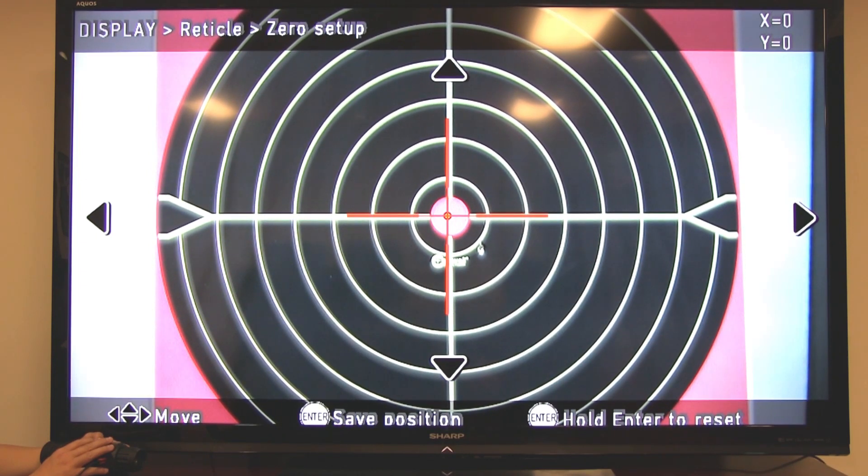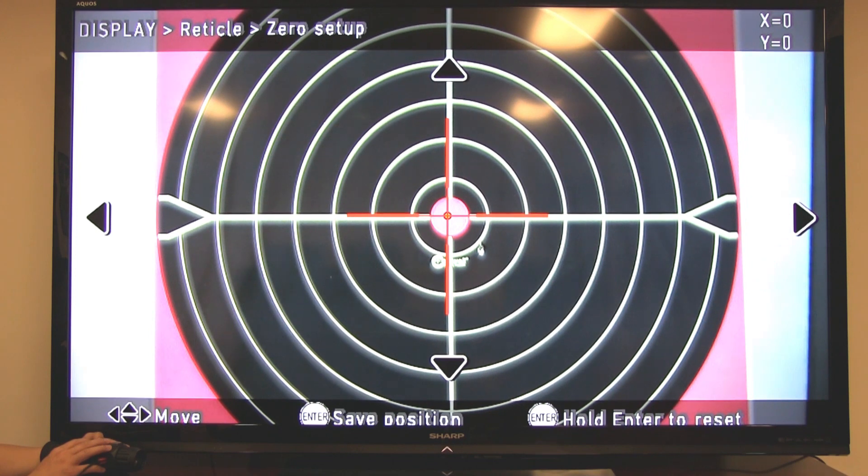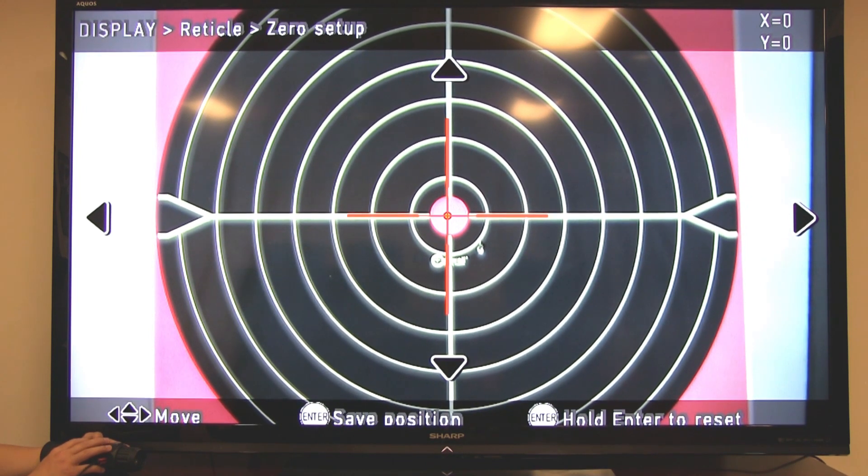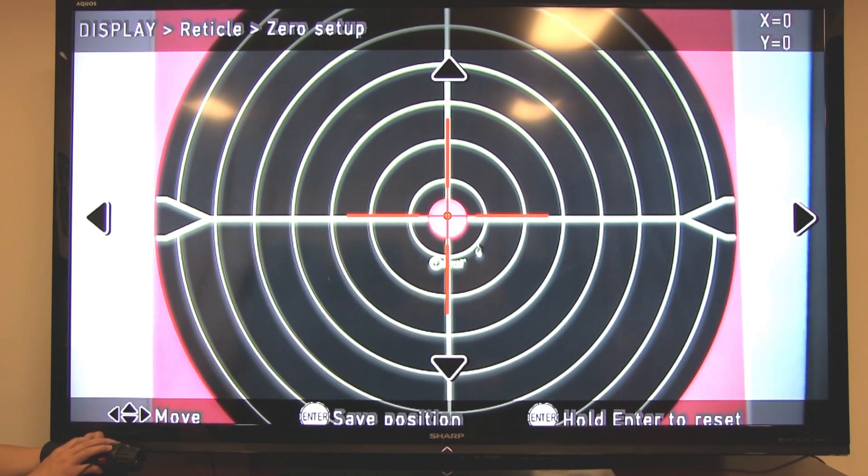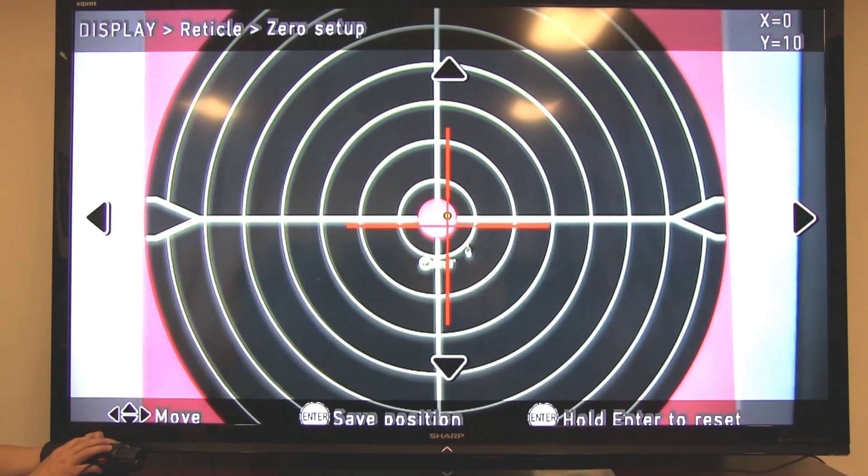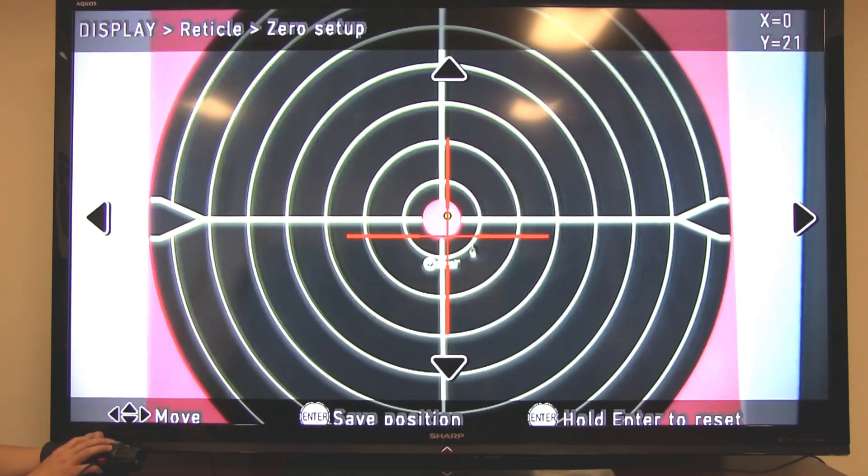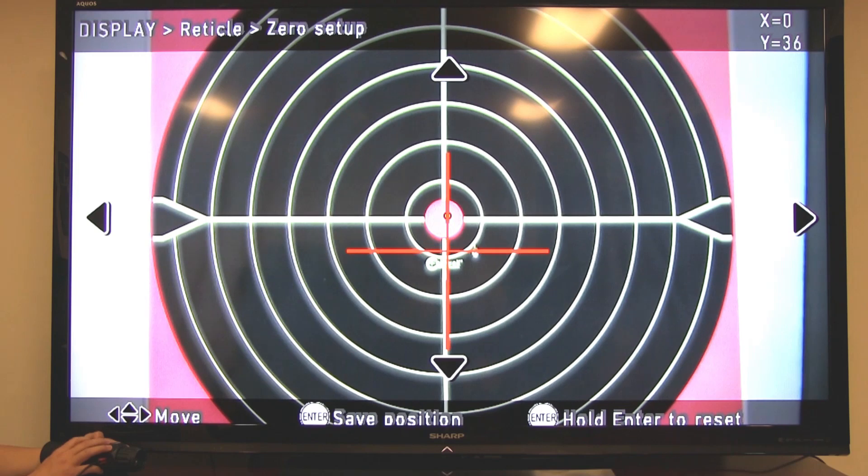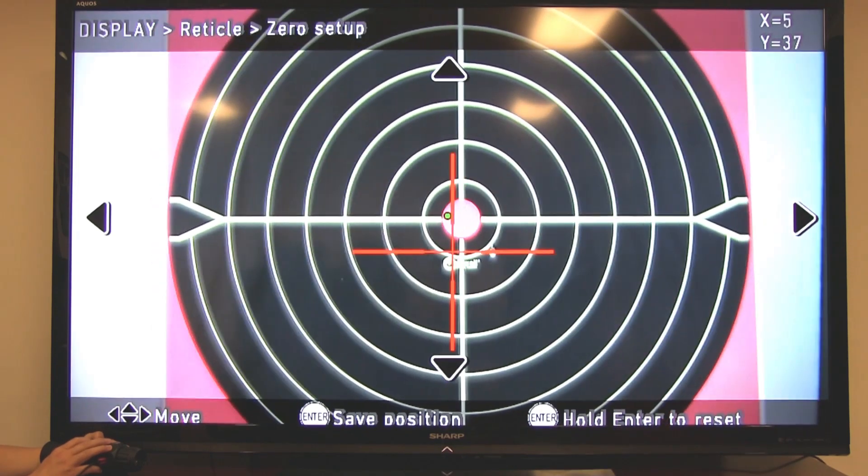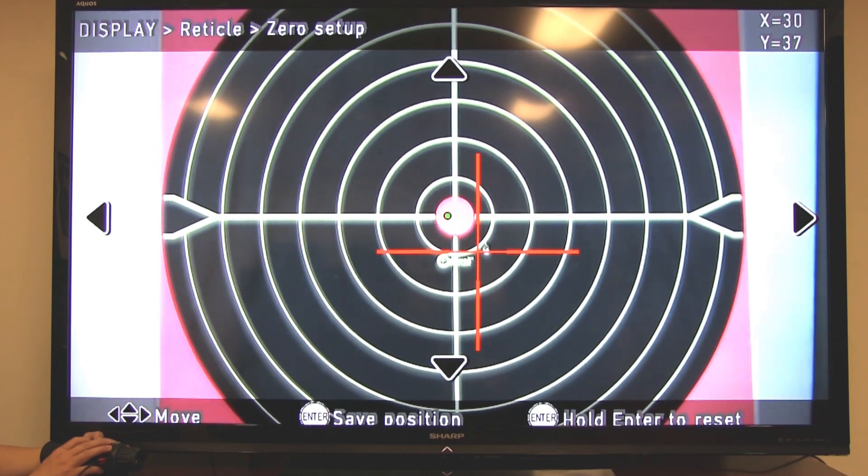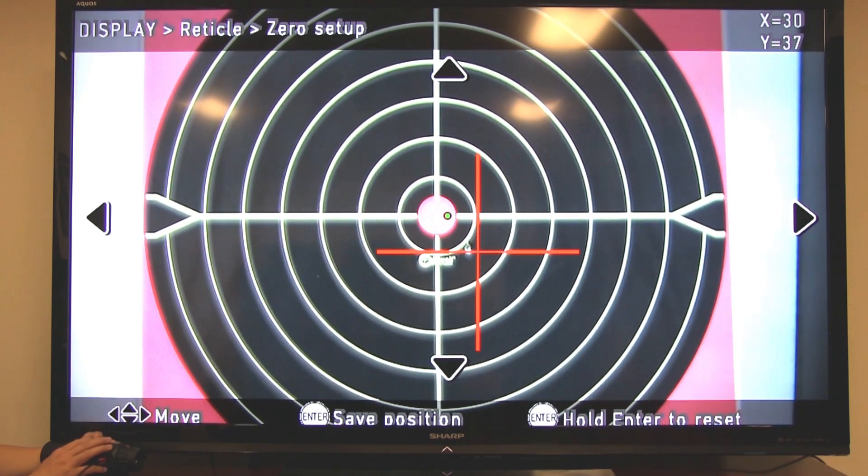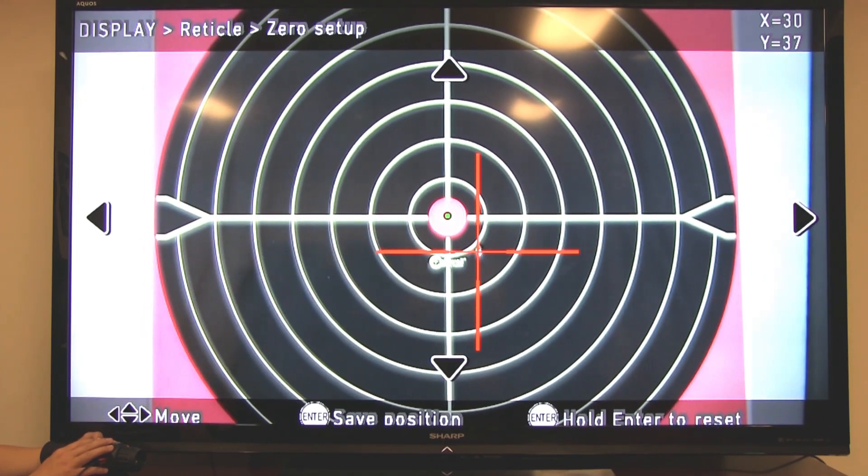Now I've simulated bullet hole to the bottom and the right of the bullseye. So what you'd want to do is use those directional keys and move that reticle down to the bullet hole. While keeping that green dot on the original point of aim. Which is generally the bullseye.